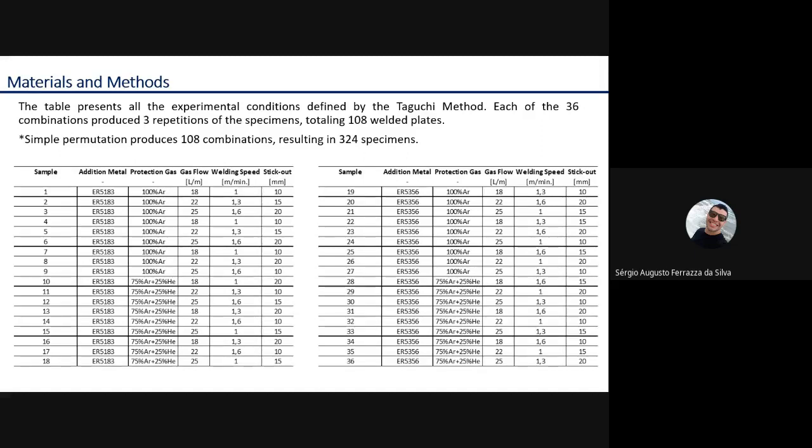Again, the table presents all the experimental conditions defined by the Taguchi method. Each of the 36 combinations produced three repetitions of the specimens, totaling 108 welded plates. Observation here: simple permutation produced 108 combinations, resulting in 324 specimens. Here we can see how Taguchi method reduces the number of experiments necessary.